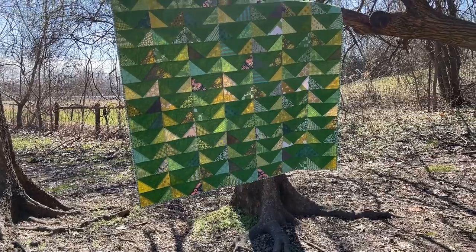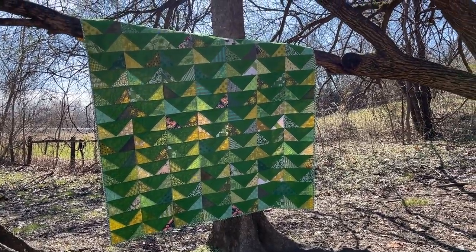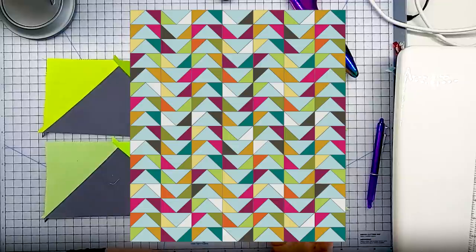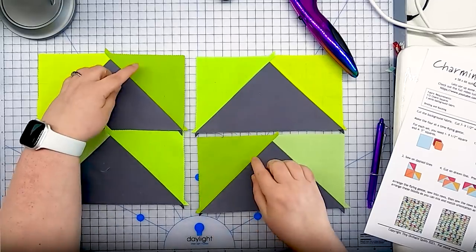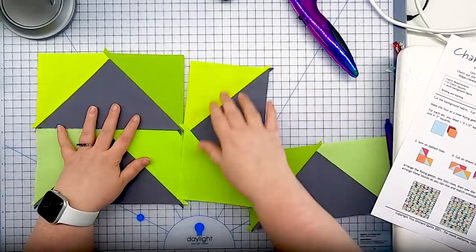But because flying geese have that great two by one proportion you can have some fun with the layout. You can alternate your rows or you can even flip some rows and have them go in the different directions because they are as long as two are tall.